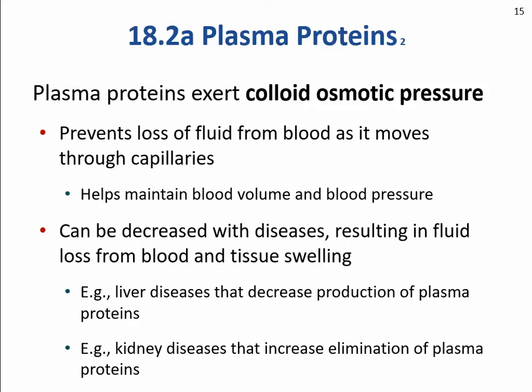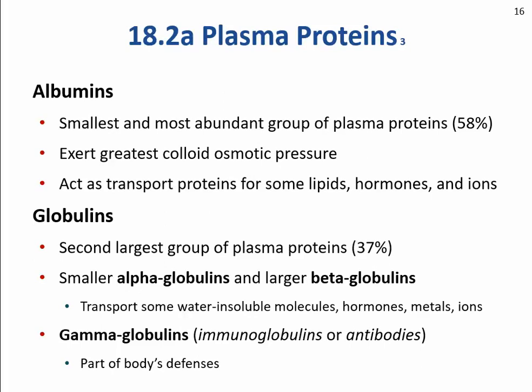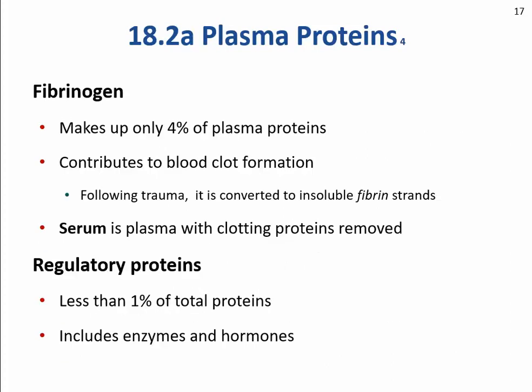Liver diseases decrease the production of plasma proteins, leading to tissue swelling and edema. Kidney diseases that cause loss of proteins in the urine — proteinuria — will also cause generalized edema due to this loss of colloidal osmotic pressure. To summarize: albumin is about 58%, globulins about 37%, and fibrinogen and regulatory proteins make up the rest.